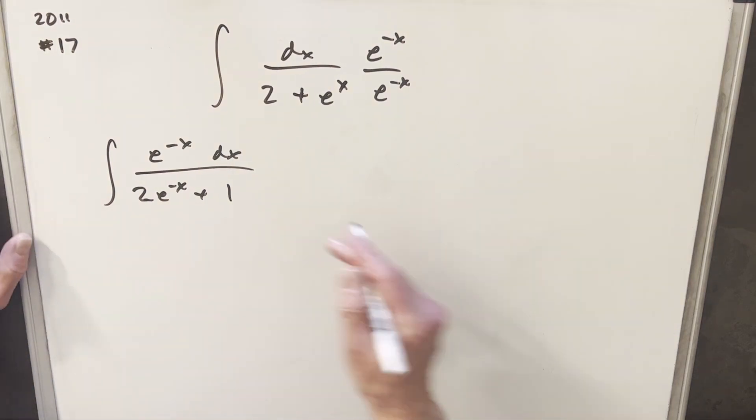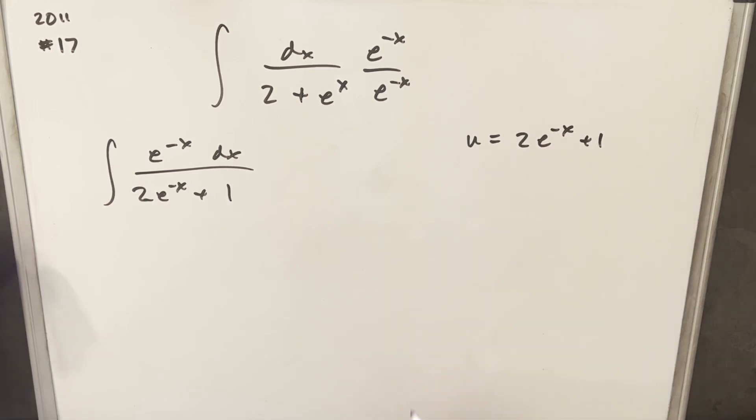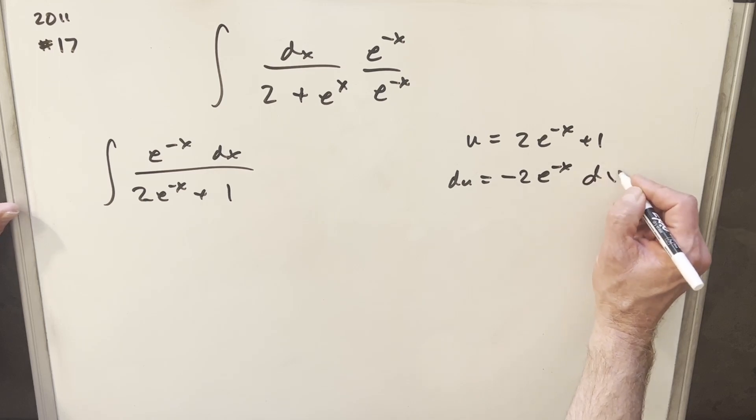So what I'll do is make my u this whole denominator. I'm going to call u equal to 2e^(-x) plus 1, and then we'll take our derivative. What's our derivative going to be? For du, we're going to have 2e^(-x), but then we're going to pull this minus out here. Derivative of 1 is 0, and we just need a dx.